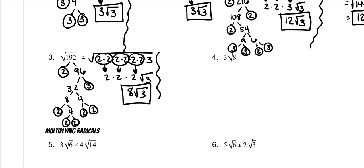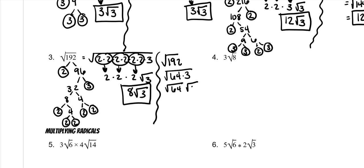Now, the perfect square way — you might have recognized that 64 can go into 192. So it's 64 times 3, and you can separate those. And if you look above, 64 is a perfect square for 8. So you can get it both ways — it just depends which way you recognize first.